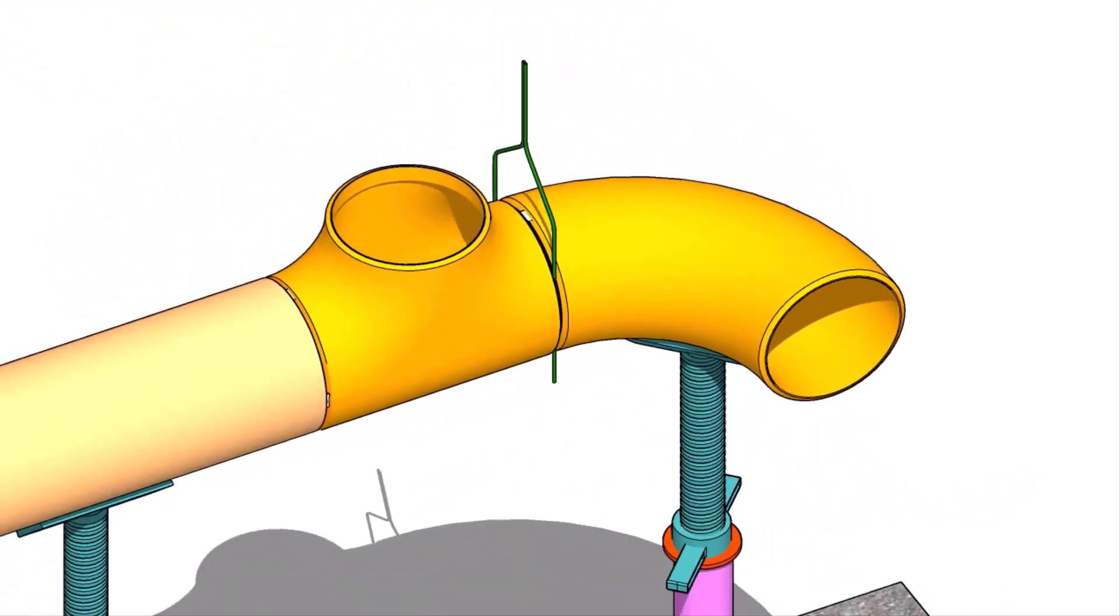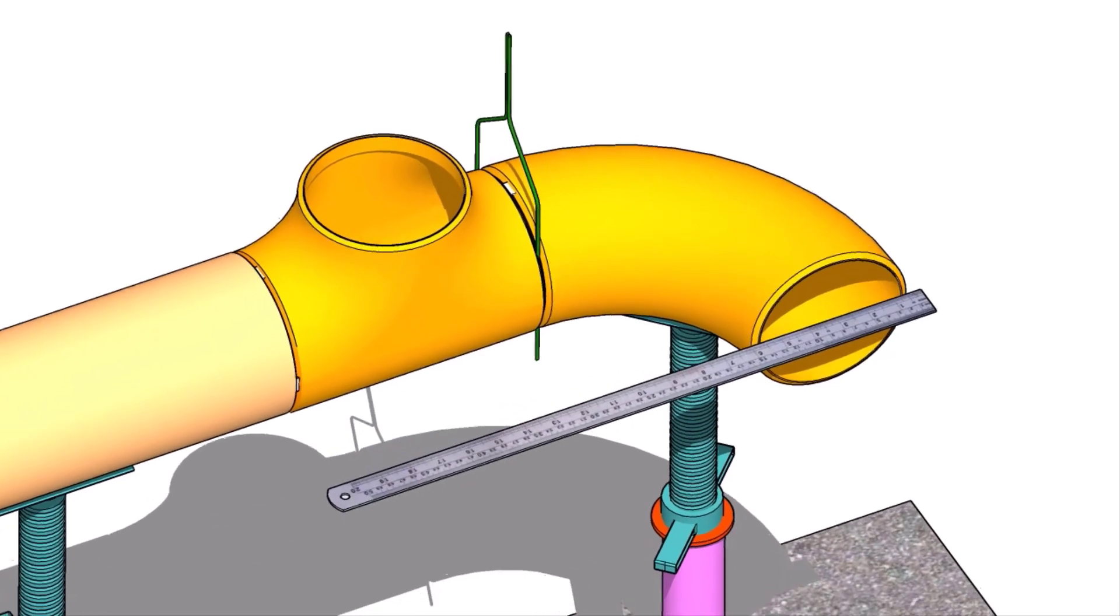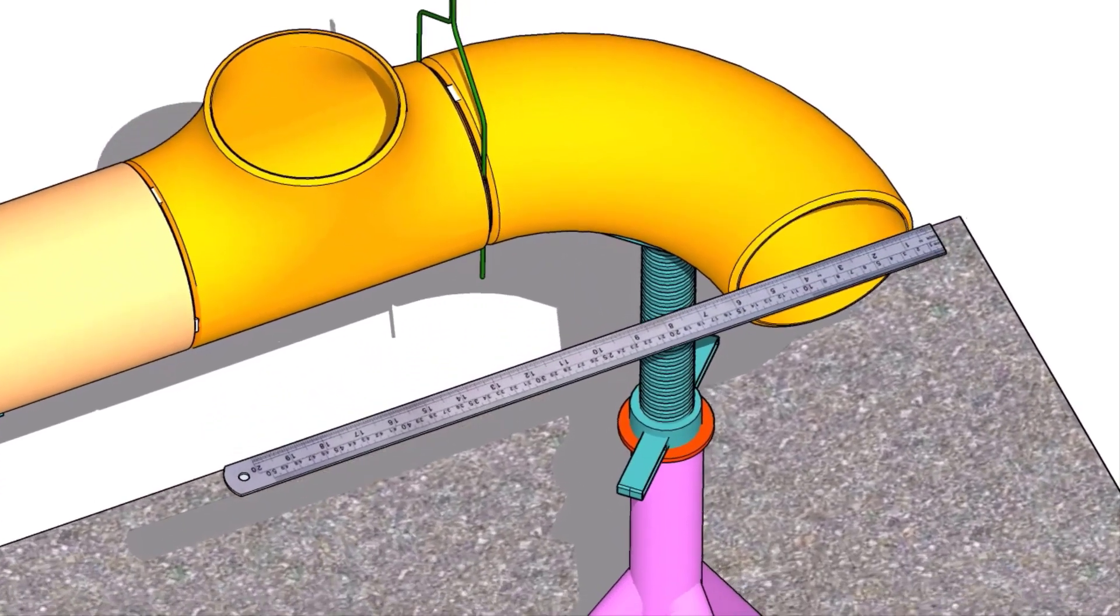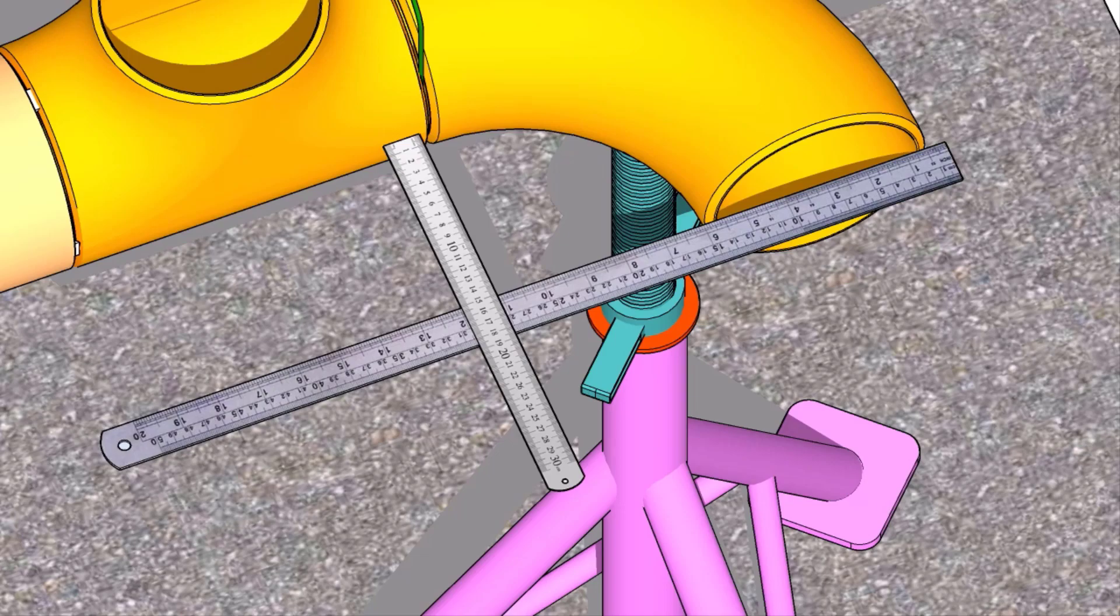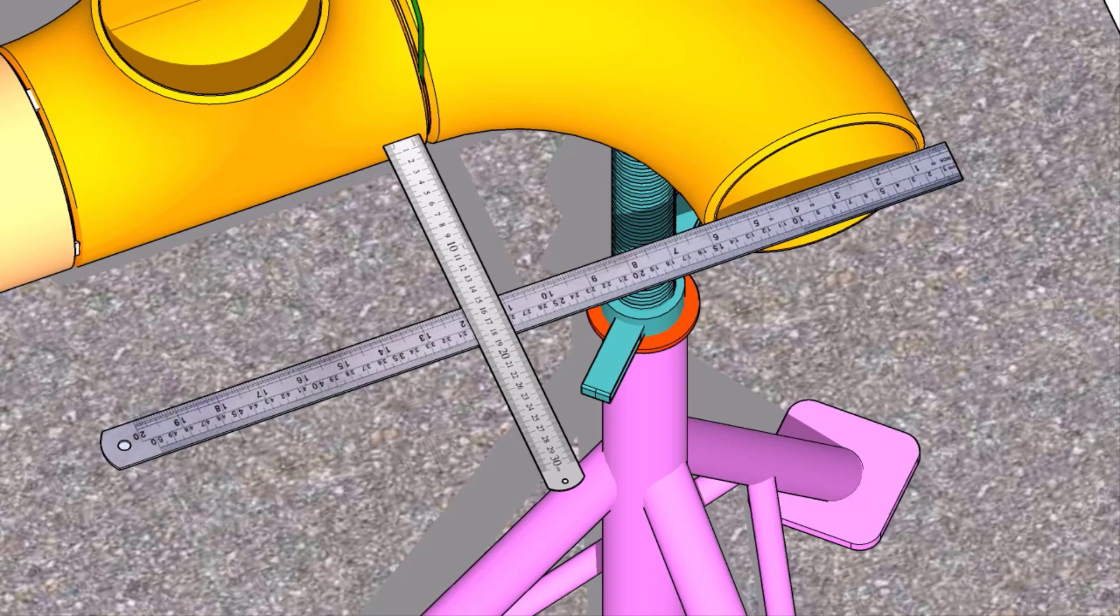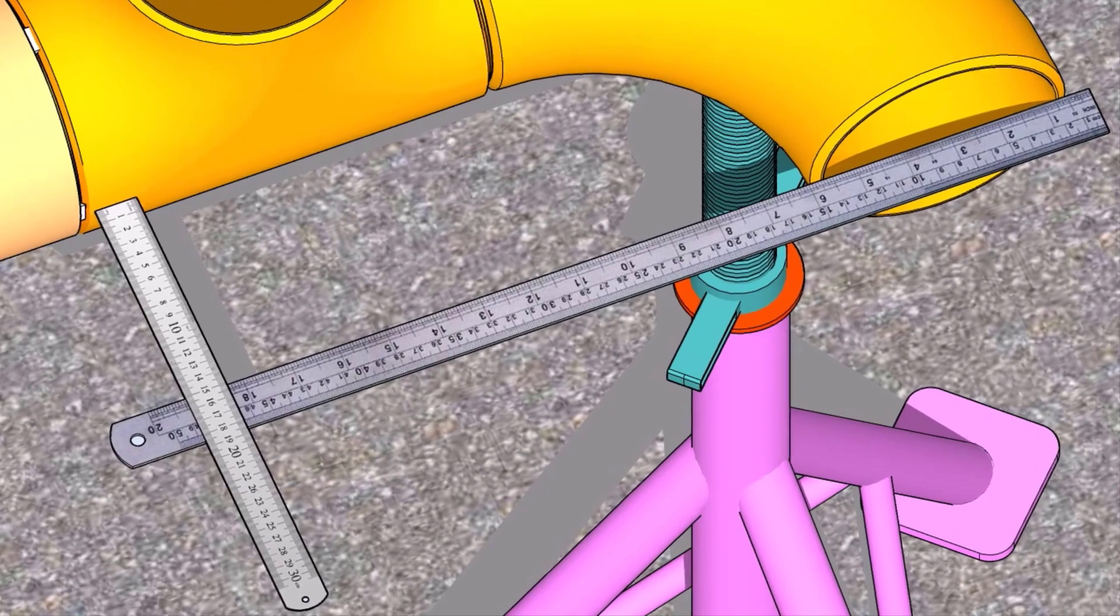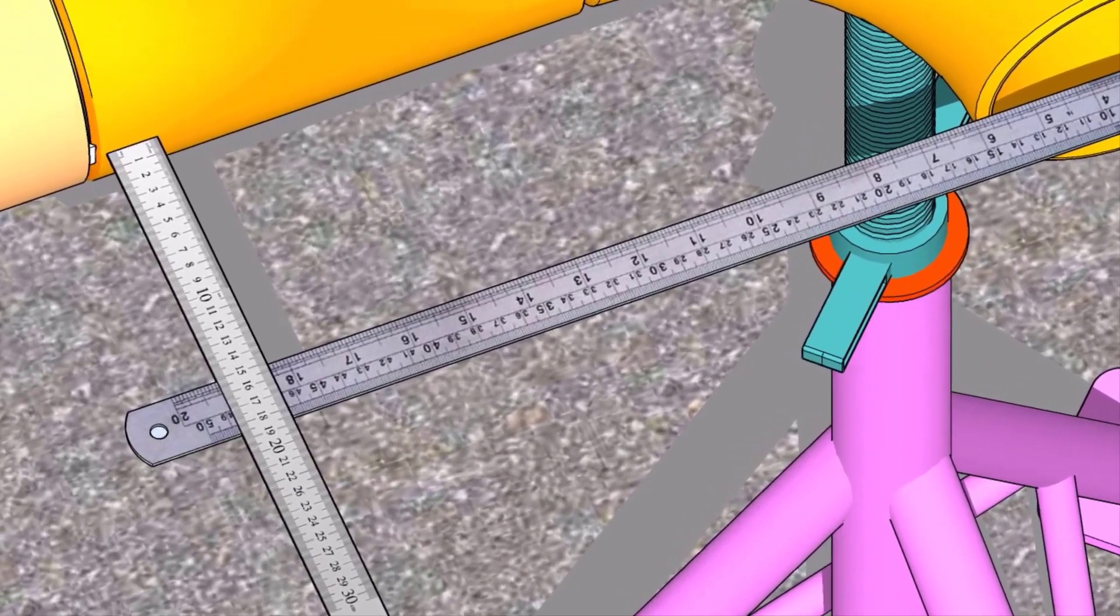Now, put a scale on the face of the elbow horizontally. Check the distance between the scale and the side of the tee at its ends as shown. If necessary, turn the elbow as required and maintain both the measurements equal.